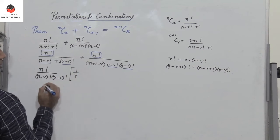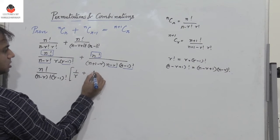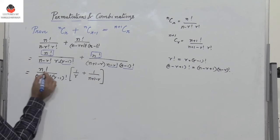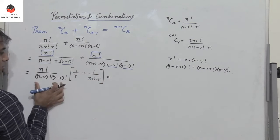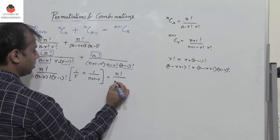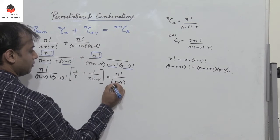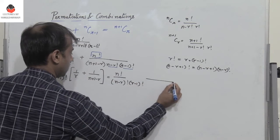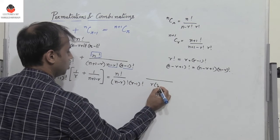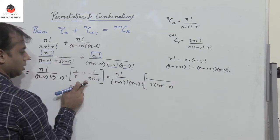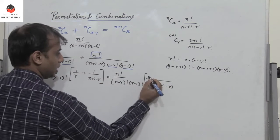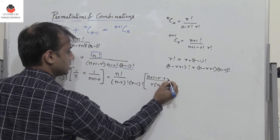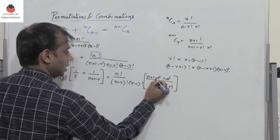Within the brackets we have 1 divided by R plus 1 divided by (N plus 1 minus R). Taking the LCM, which is R into (N plus 1 minus R), multiplying 1 by this gives N plus 1 minus R, and multiplying 1 by R gives plus R. The R terms cancel, leaving N plus 1.